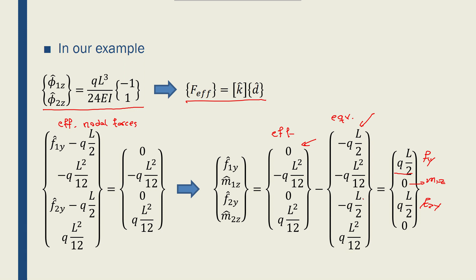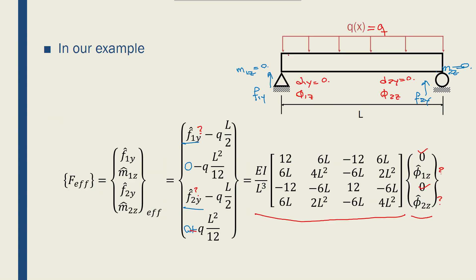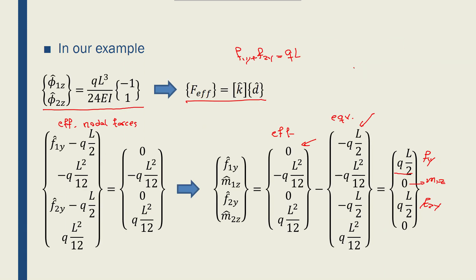And the summation of f1y and f2y, f1y plus f2y is equal to QL, which if I go back to my problem, this is Q multiplied by L would give me a QL at the center of the beam. And so we found how to solve a beam with a distributed load in this lecture.